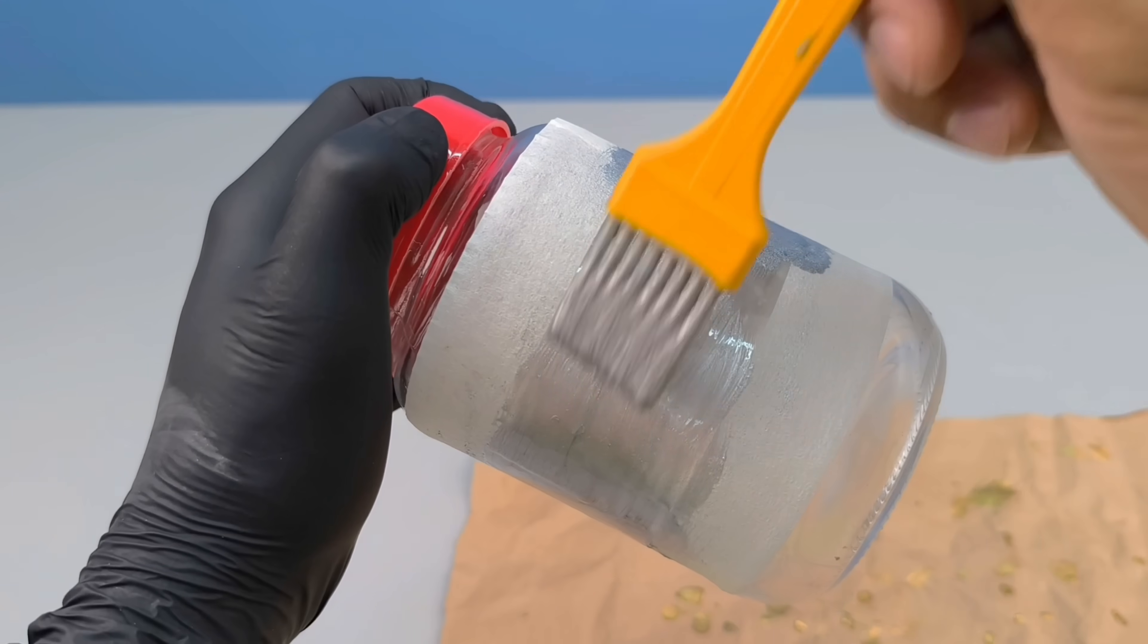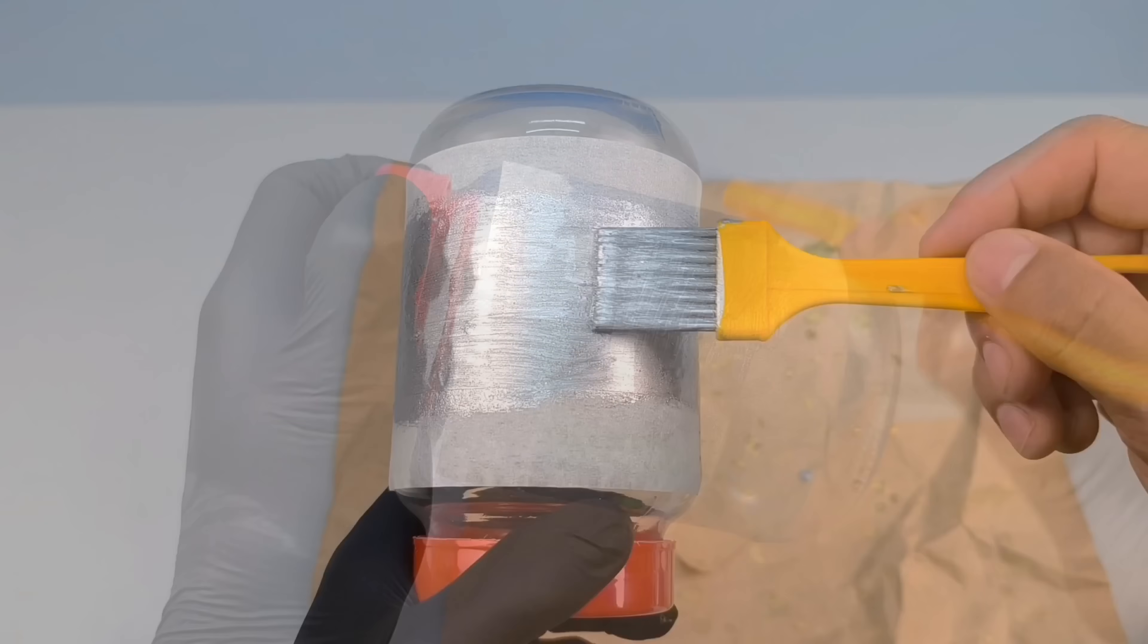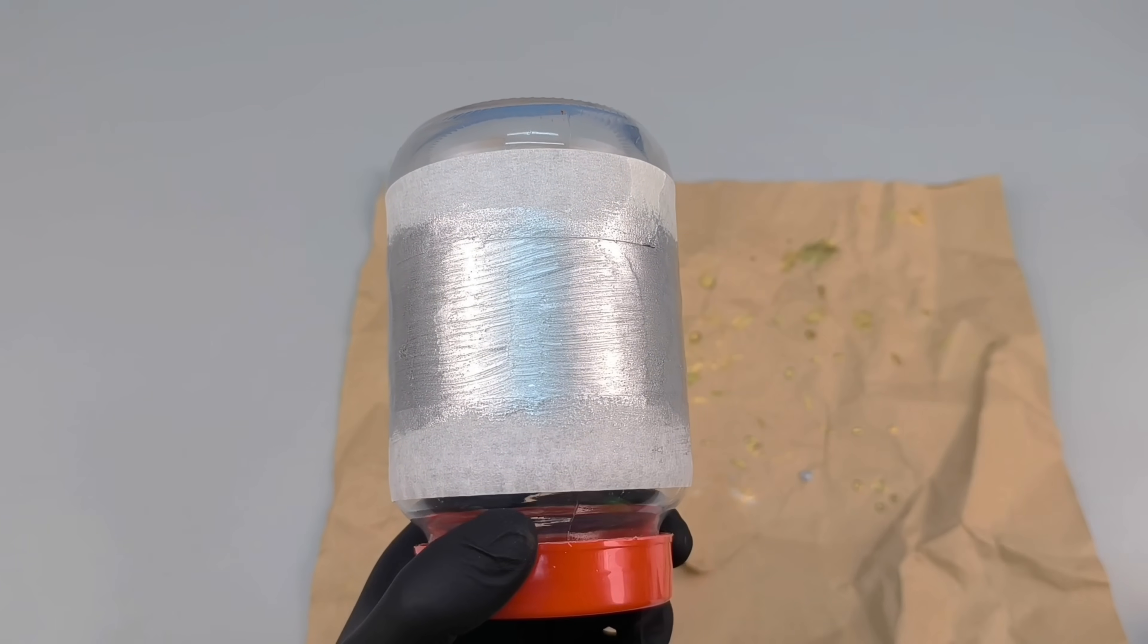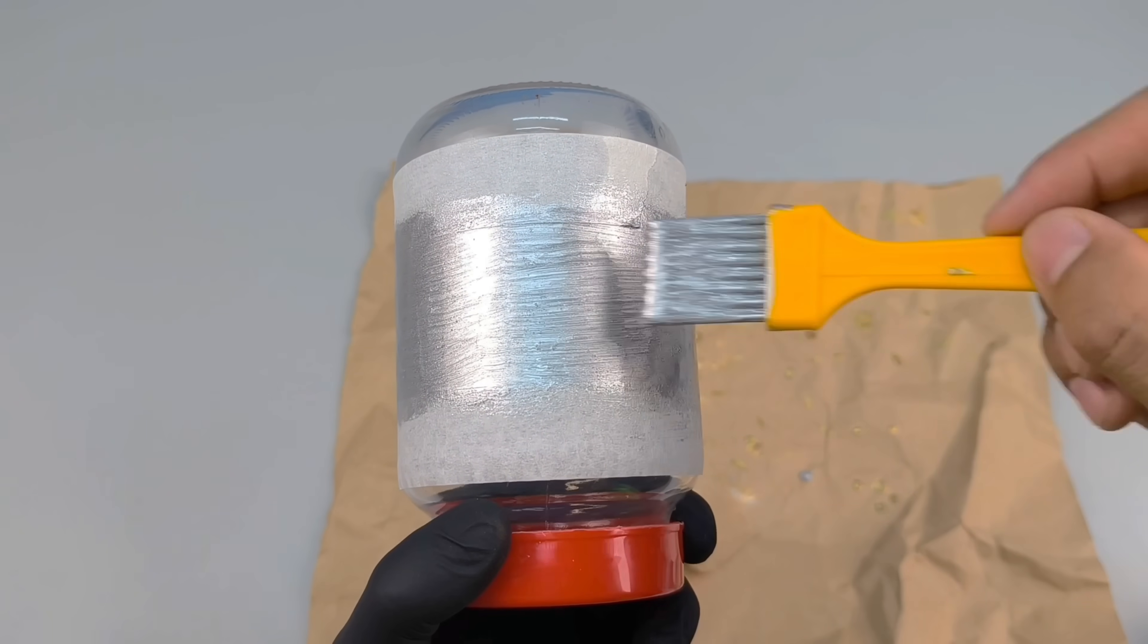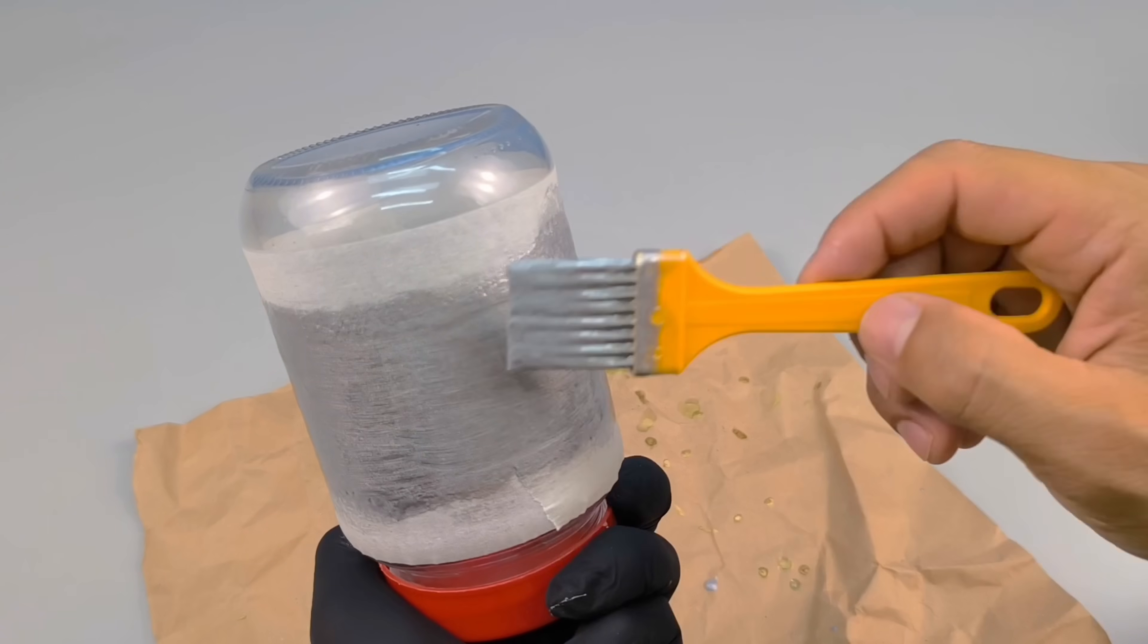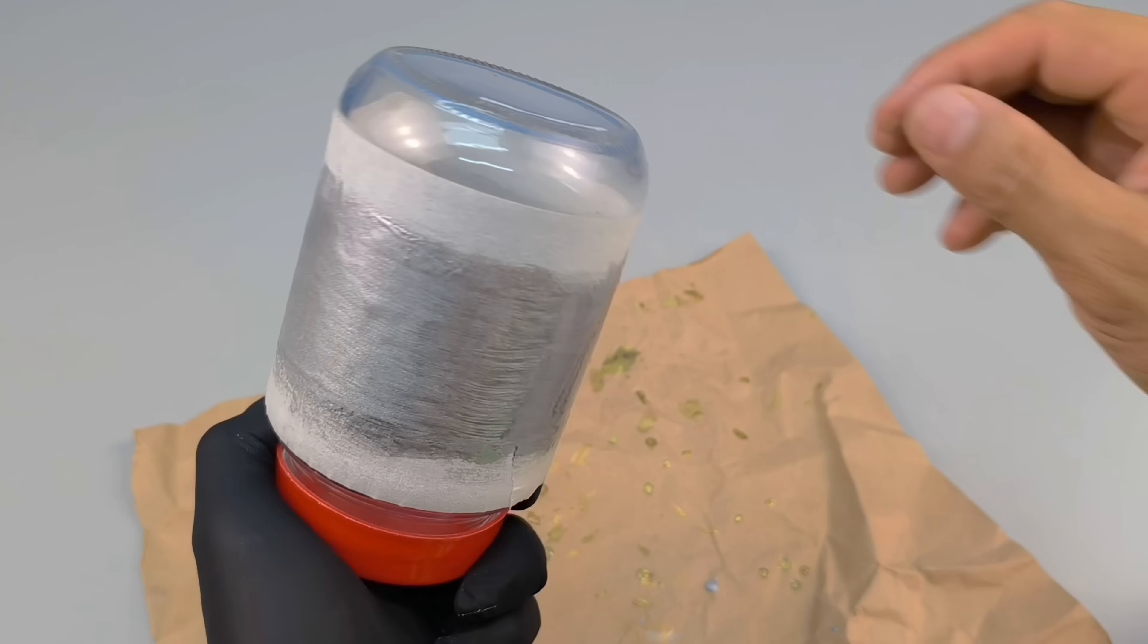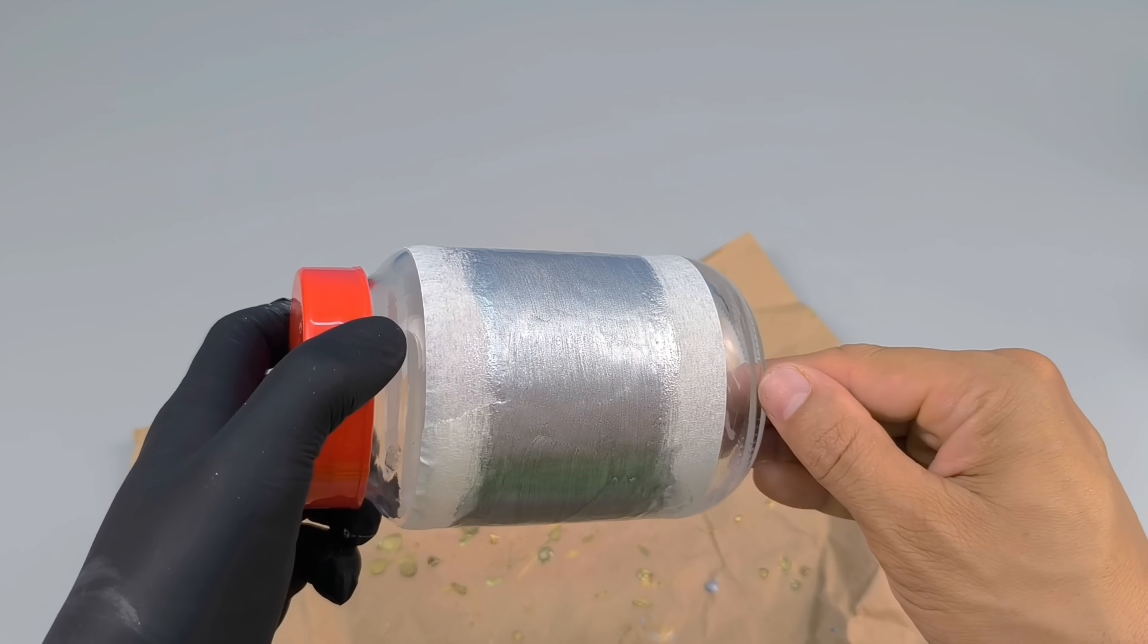Then I wait ten minutes for the initial drying time, enough time for the ethanol to evaporate and the silicone to begin to set. Next, I apply a second coat, reinforcing the coverage and intensifying the metallic shine. The glass, which was previously transparent, now has a mirror-like silver finish, reflecting the light with an almost chrome effect. Finally, I let the pan rest for at least eight hours, ensuring the paint fully cures and forms a strong, durable film.